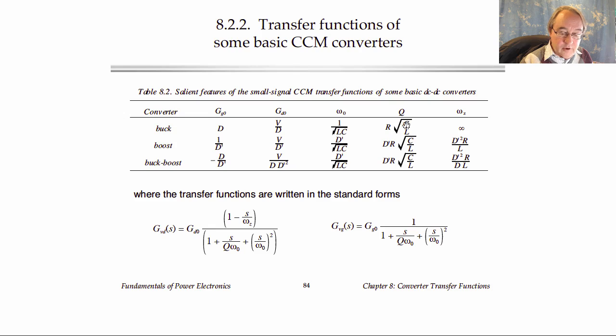And all we need to do is include a turns ratio in GVG, which is the transformer turns ratio. And as far as GVD is concerned, the gain is actually written in terms of the output voltage V rather than the input voltage VG. And so the effect of the turns ratio cancels out, and you can apply this GVD transfer function with these coefficients directly.